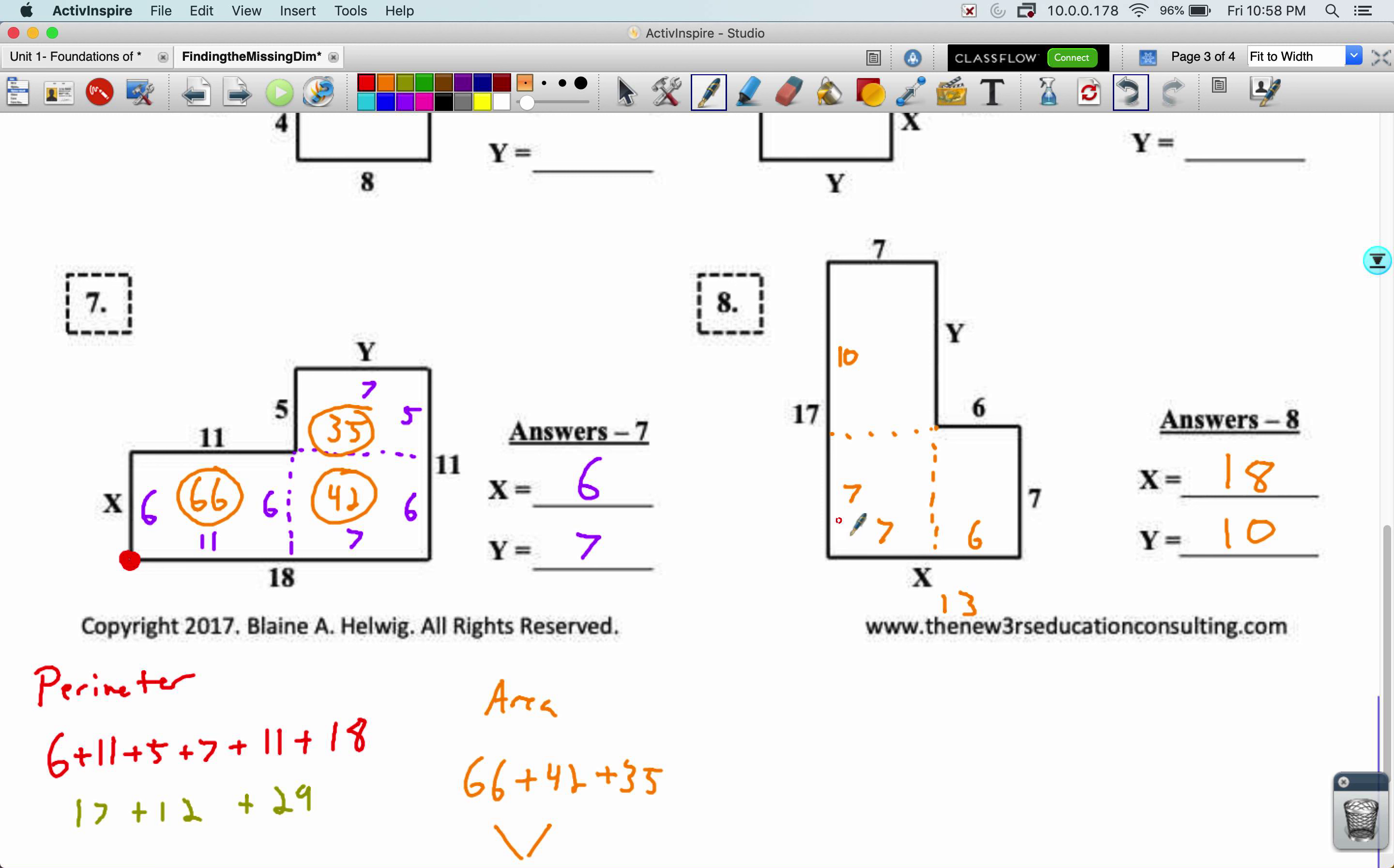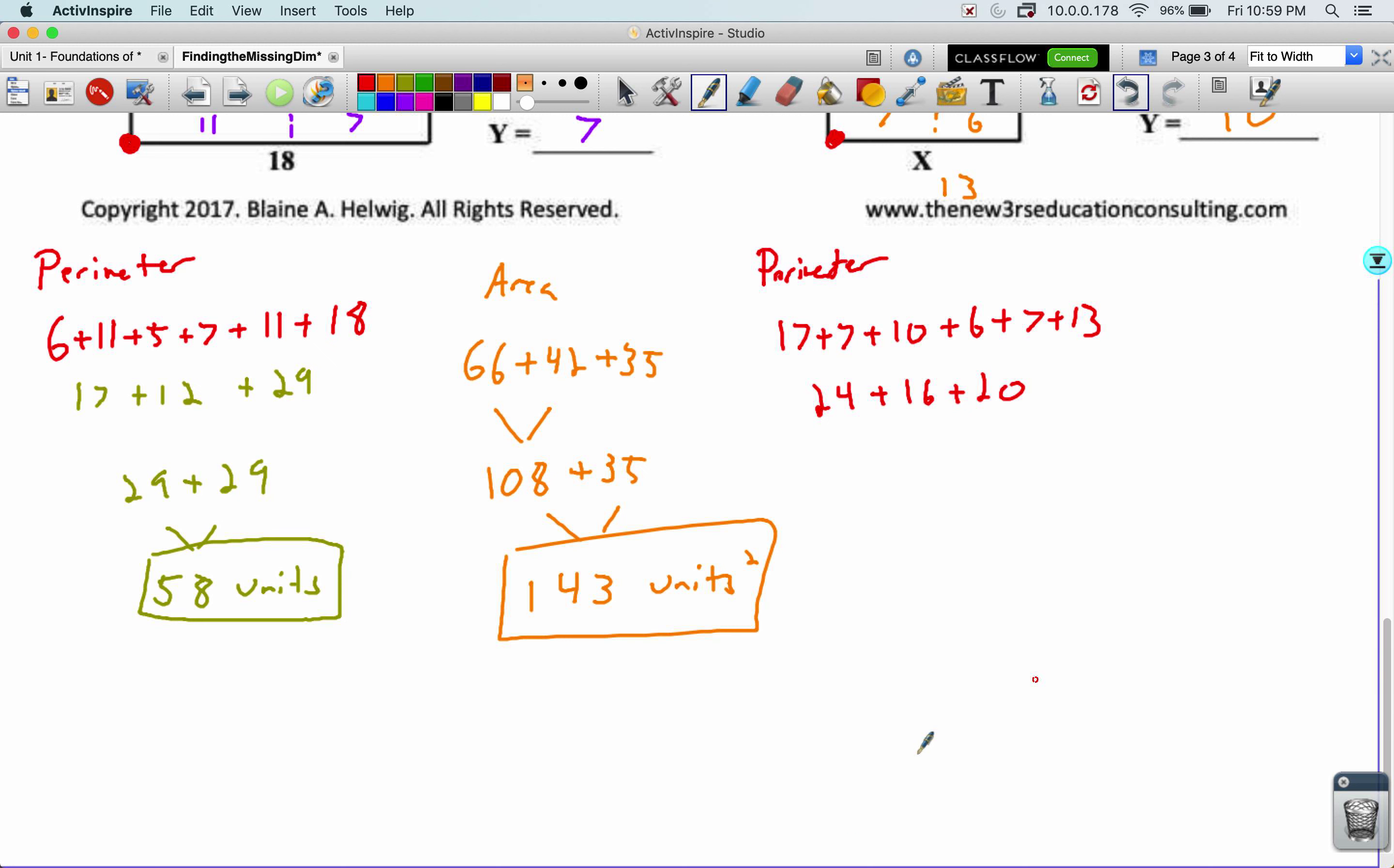All right. Let's find the perimeter. I'll make my dot. We get 17 plus 7 plus 10 plus 6 plus 7 plus 13 to go all the way around the shape. 24 plus 16 plus 20. 40 plus 20 equals 60 units.